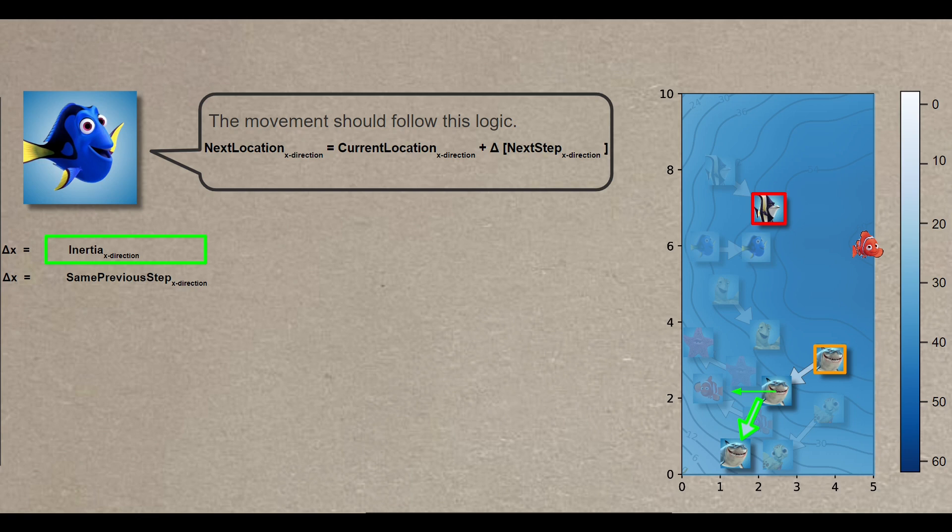The first part, indicated as green here, is the inertia, which corresponds to the previous momentum. Essentially, this implies that you should replicate the same step you took previously.